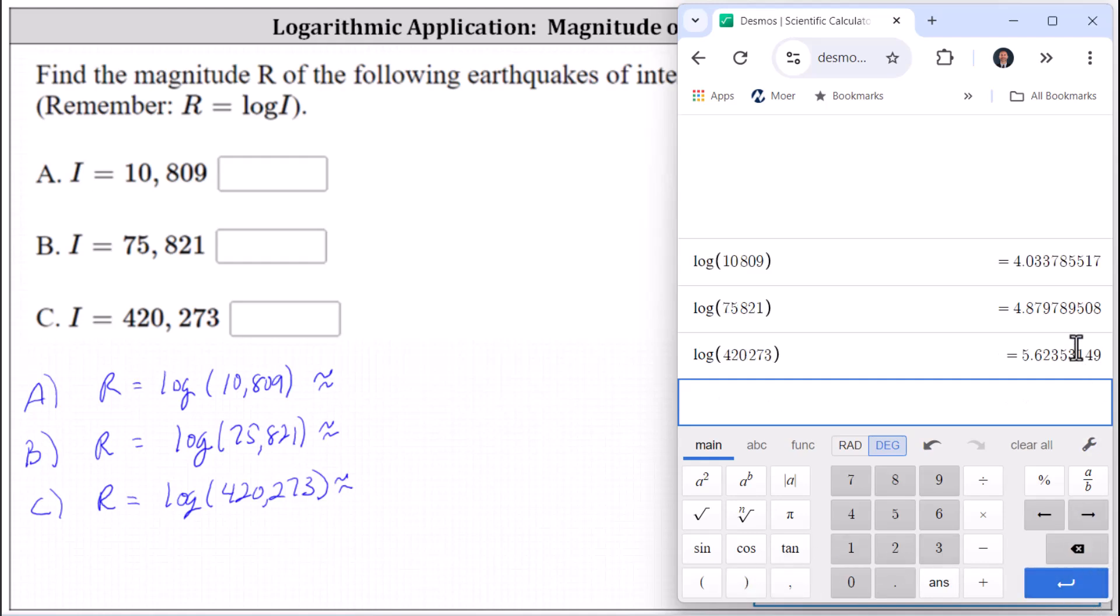We need to round each of these to one decimal place with a tenths place value. For A, we have 4.0. For B, we have 4.9. And for C, we have 5.6.